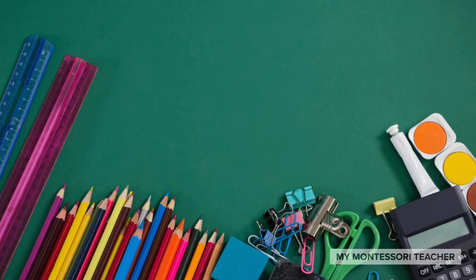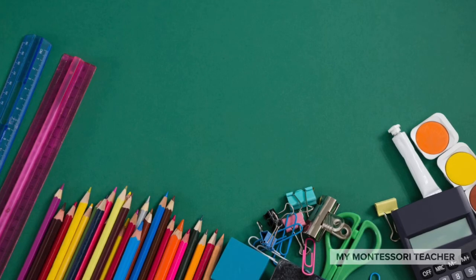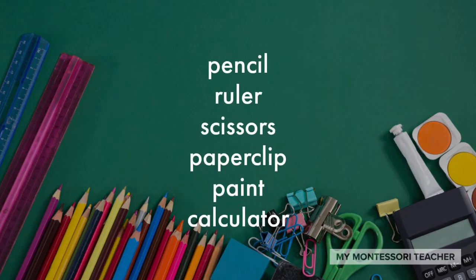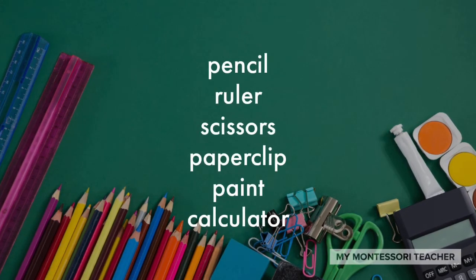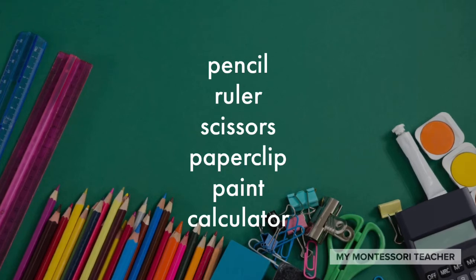Here's another image. It's full of concrete nouns. Take a minute and see if you can spot at least four or five different concrete nouns. What did you come up with? Here's some things that I found in the photo: pencil, ruler, scissors, paper clip, paint, calculator. These are all examples of concrete nouns.